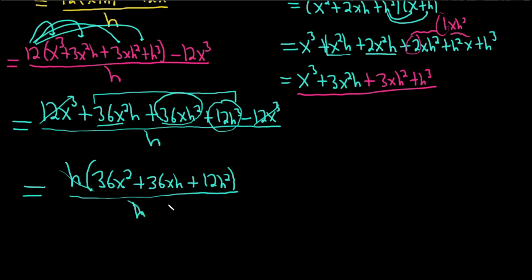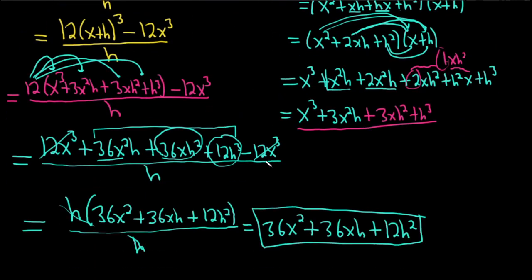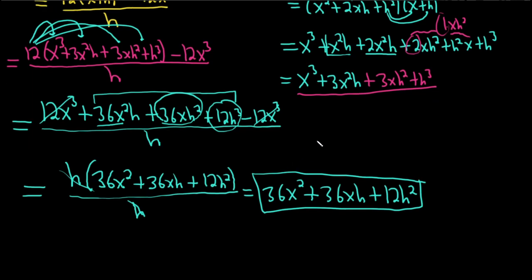These cancel. And so we end up with 36x squared plus 36xh plus 12h squared. And that would be the final answer. It was a lot of work. This is definitely one that takes more time. And it's really because of the cube term, right? You have to do all of that extra work up here with the x plus h cube. Hopefully, this video has been helpful. Good luck.